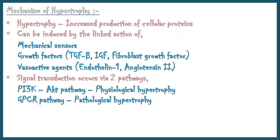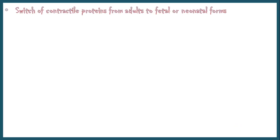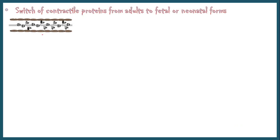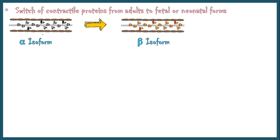Signal transduction along these pathways causes expression of certain genes and synthesis of more structural proteins. Hypertrophy may also be associated with a switch of contractile proteins from adult forms into fetal or neonatal forms. For example, during muscle hypertrophy, the alpha-isoform of myosin heavy chain is replaced by the beta-isoform, which is a slower, more energetically economical contraction.